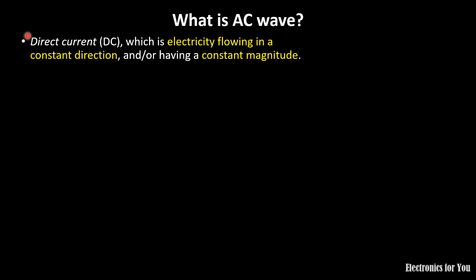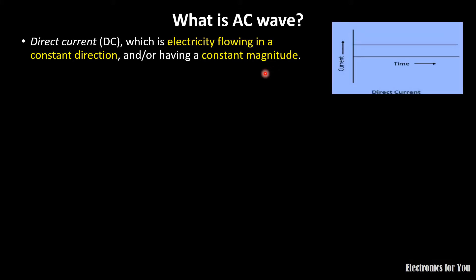The first topic is what is AC wave. Basically, electricity is divided into two types: the first one is direct current and the other is alternating current. Direct current is the current which has a constant direction and a constant magnitude — it has the same direction and its magnitude is constant over time. Here you can observe the waveform of DC: over time the current remains constant, not changing its direction.